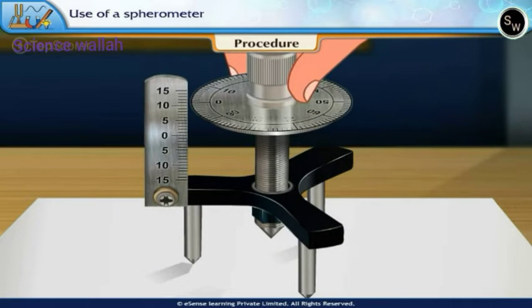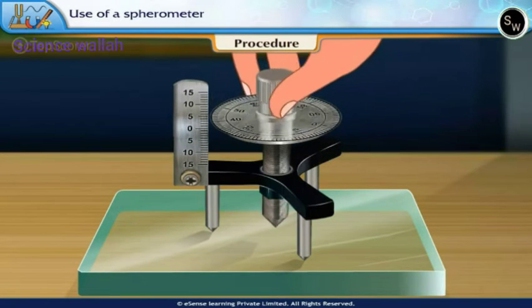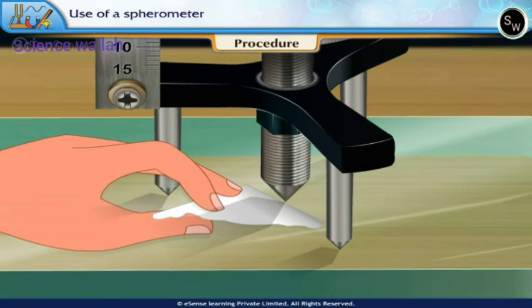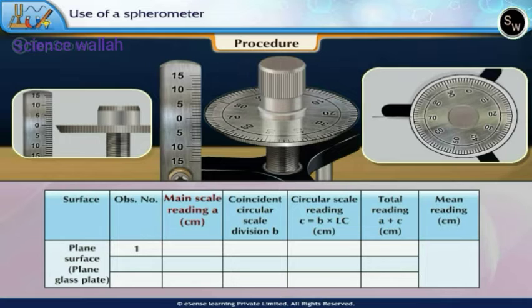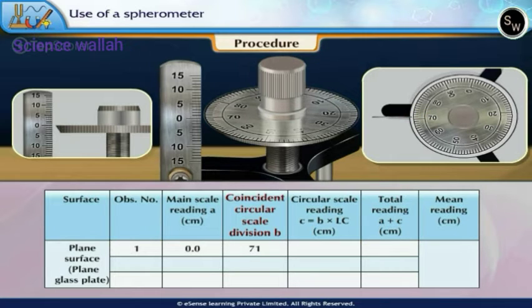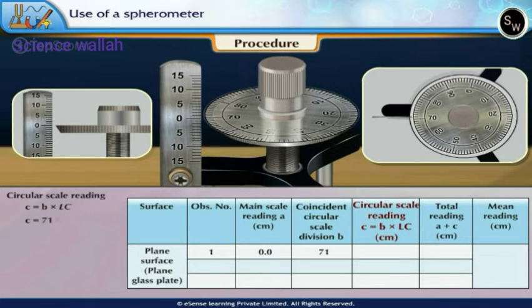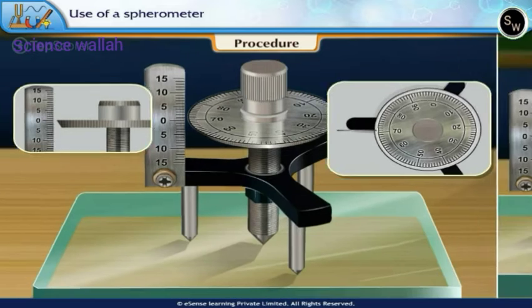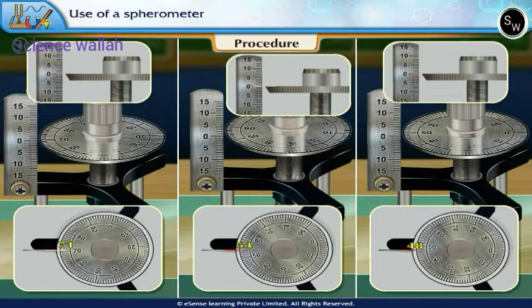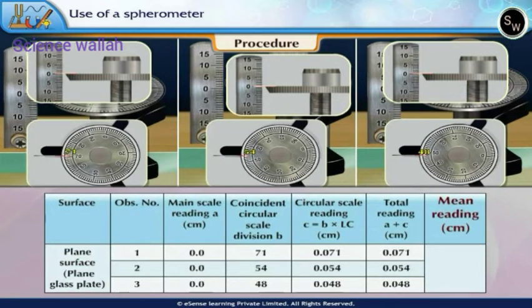Now, raise the screw and place the spherometer on the plain glass plate. Lower the screw till its tip just touches the glass plate. Note the main scale reading A as the value of the main scale division just below the disc of the circular scale. The main scale reading is A = 0.00cm. Note the circular scale division B which coincides with the main scale. Hence, calculate the circular scale reading C and the total reading A + C. Take at least 3 independent readings for the same surface each time raising the screw and lowering it. The mean of these readings Y₀ is often called the zero reading or reference reading.